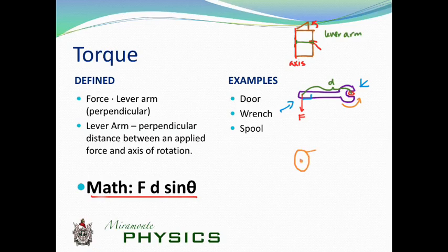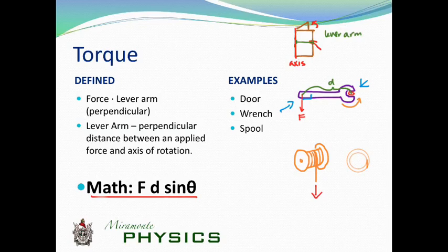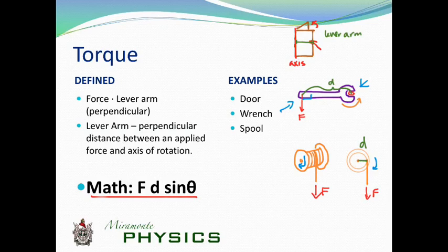Another example is a spool or cylinder with some cable wrapped around it. If you pull down on the string or cable, the lever arm — the distance from the force to the axis of rotation, which is the center of the spool — is actually the radius of the spool. That's useful when solving these kinds of problems. One convenient thing about a spool and thread is that when you pull the thread out, it always comes out at a right angle. So we don't have to worry about any angles when dealing with spools.